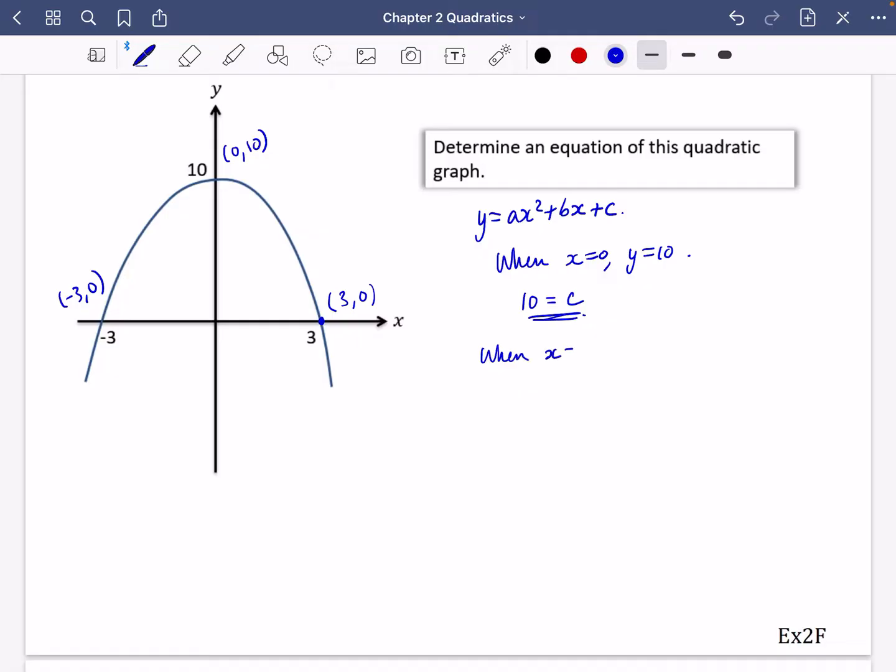Now we're going to say when x equals 3, y equals 0. So 0 equals 9a plus 3b plus 10. In other words, 9a plus 3b equals minus 10. And when x equals minus 3, y equals 0. So 0 equals 9a minus 3b plus 10. So minus 10 equals 9a minus 3b. And then I'm going to do simultaneous equations on my calculator with these ones. So it's 9a, 3b minus 10, 9a minus 3b minus 10. And we come up with that a is equal to minus 10 over 9 and b is equal to 0.